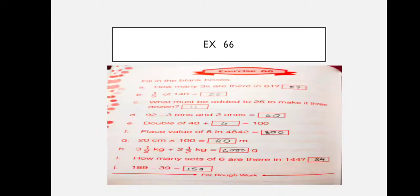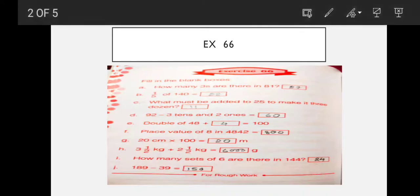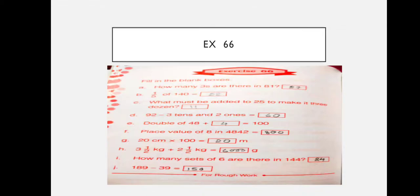Double of 48 — which digit do we add to it to make 100? Double of 48 is 96. So 100 minus 96 equals 4. Number F you have to do as homework.